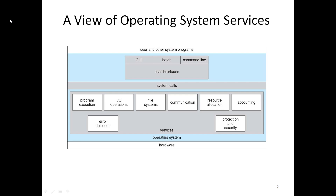In this video I am going to tell about the various services provided by the operating system. As we know, the operating system is an interface between the user and computer hardware. The various services provided by the operating system include program execution, I/O operations, file systems, communication, resource allocation, accounting, error detection, protection, and security.